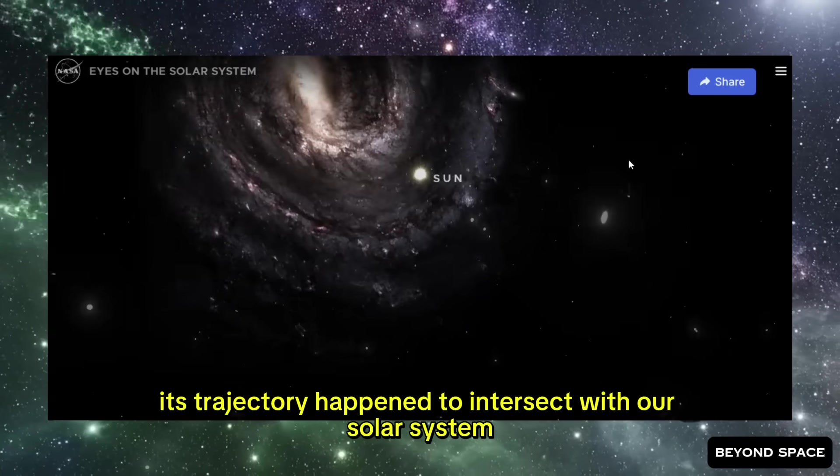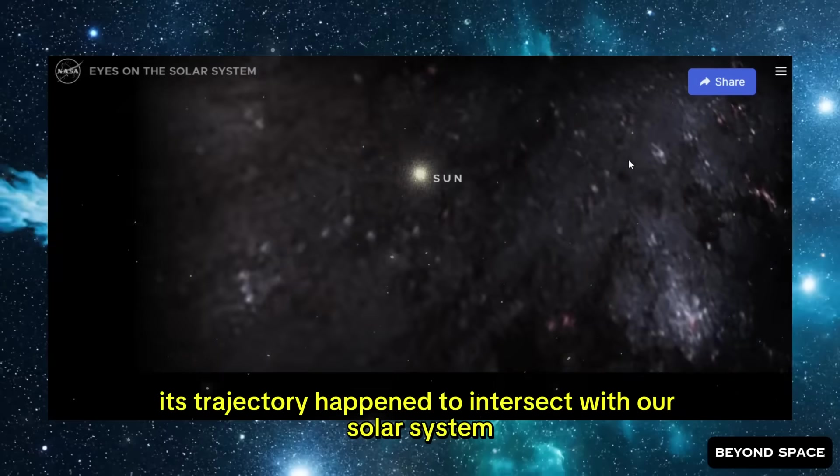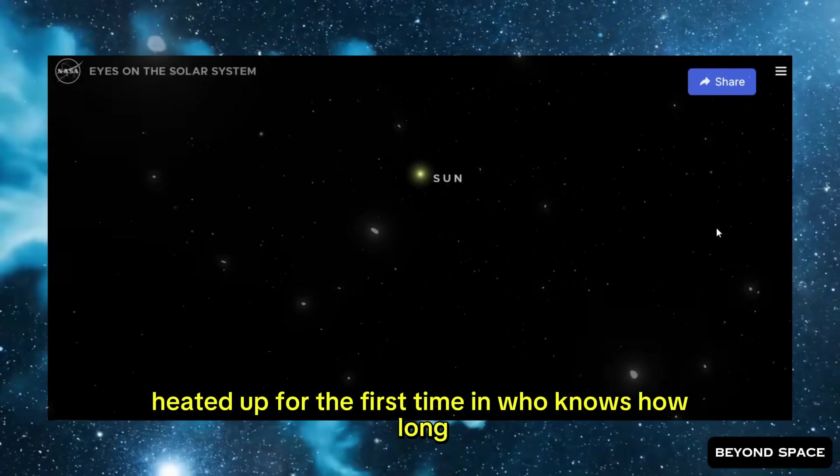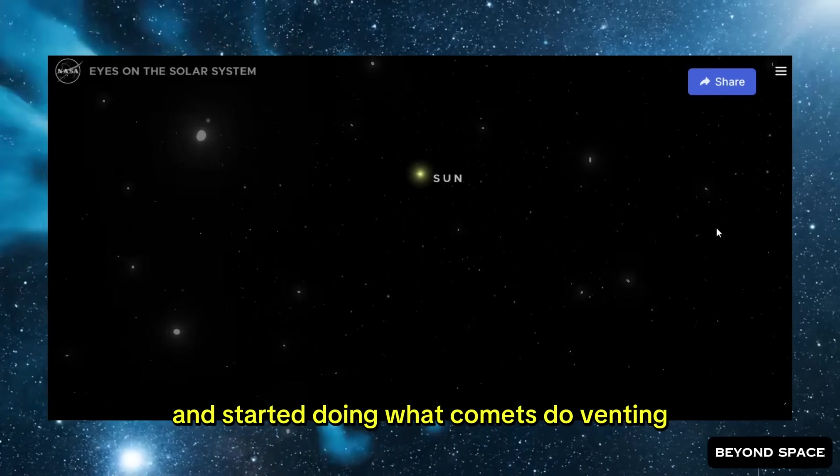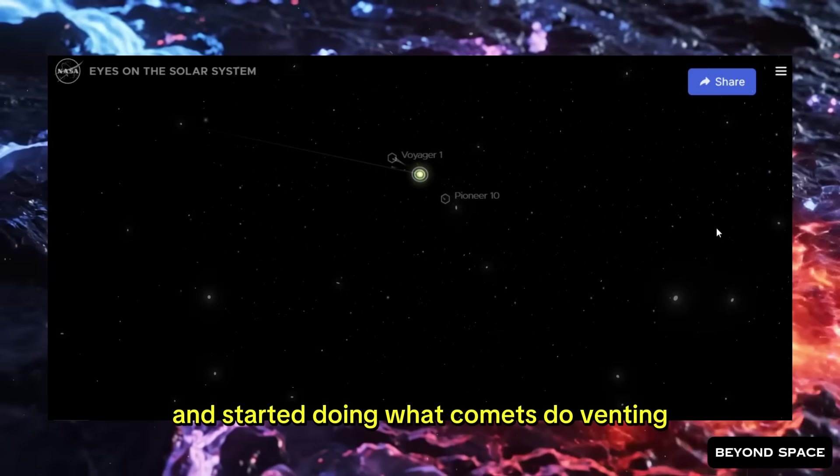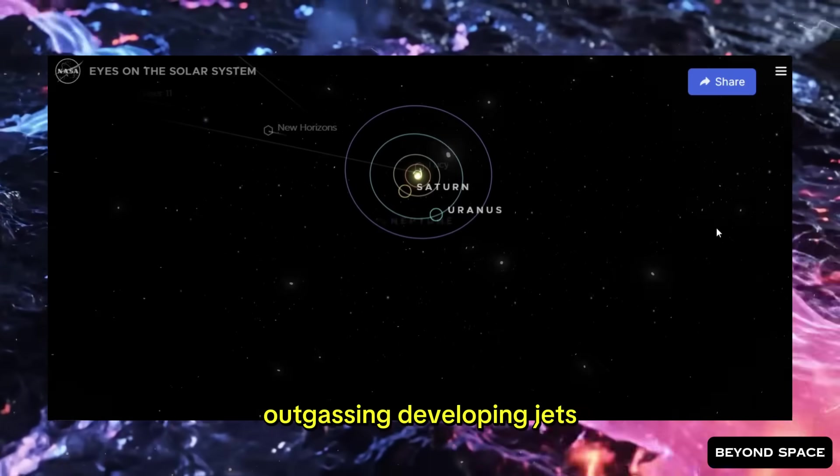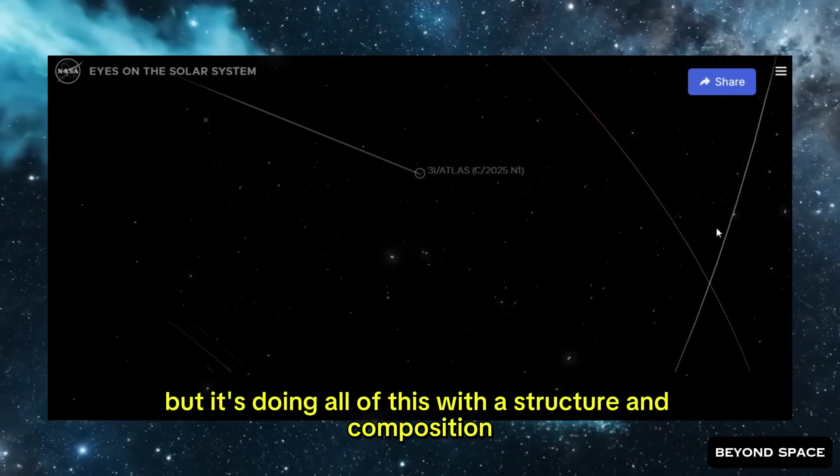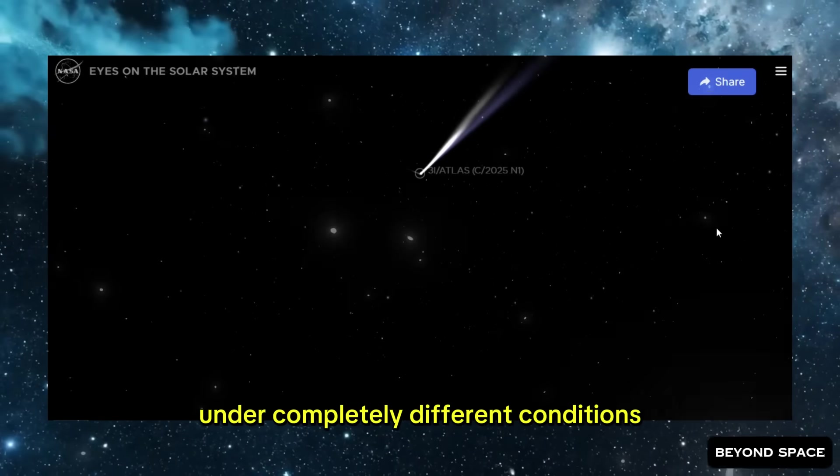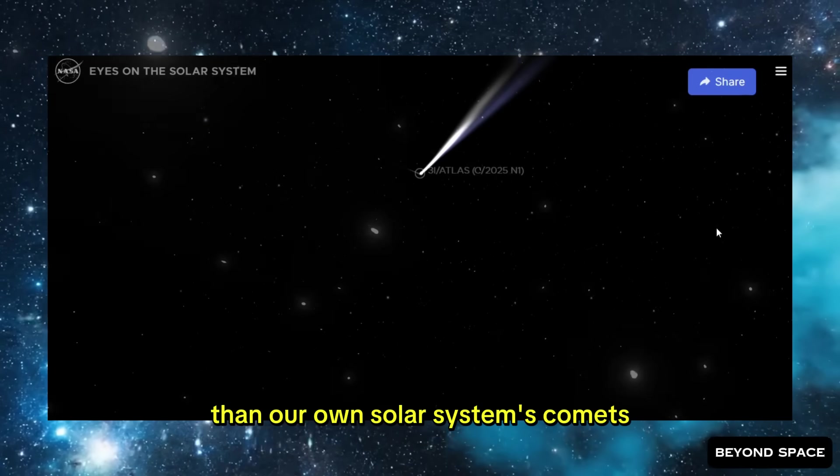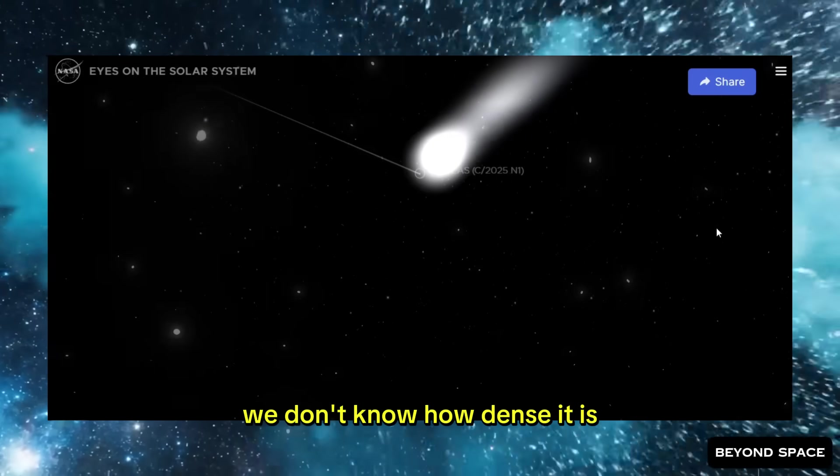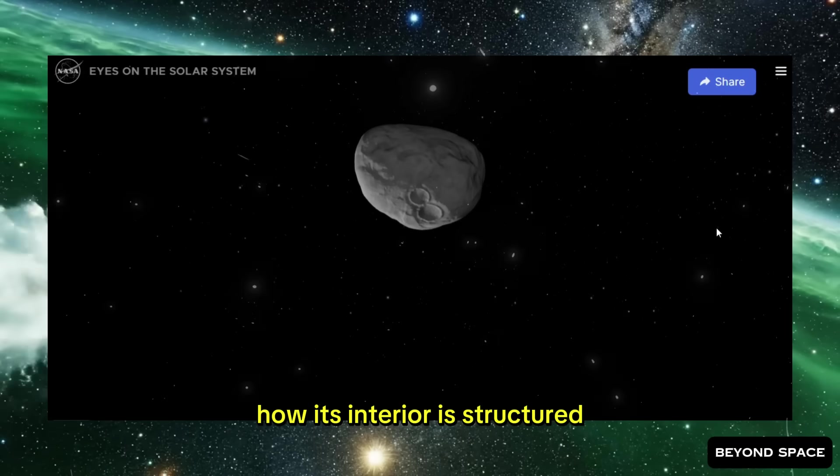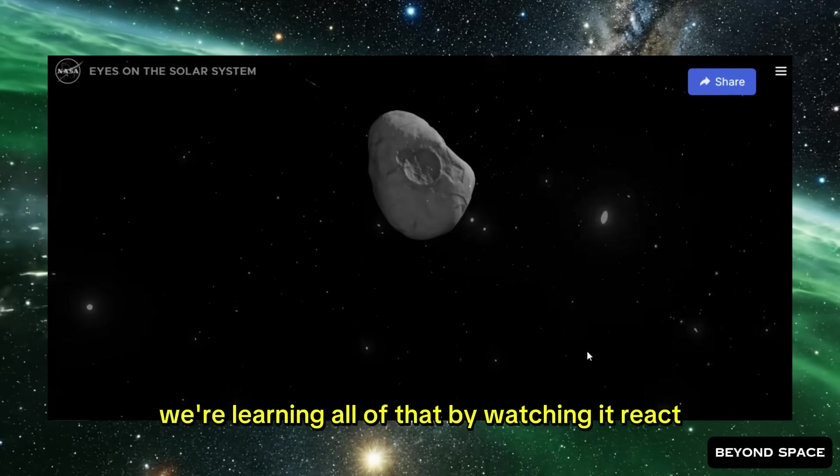And then by chance, its trajectory happened to intersect with our solar system. It fell in toward our sun, heated up for the first time in who knows how long, and started doing what comets do. Venting, outgassing, developing jets and a coma and a tail. But it's doing all of this with a structure and composition that evolved under completely different conditions than our own solar system's comets. We don't know how dense it is, how strong it is, how volatile its ices are, how its interior is structured. We're learning all of that by watching it react.